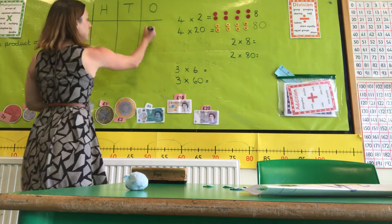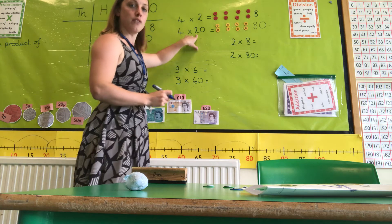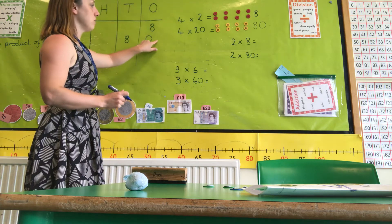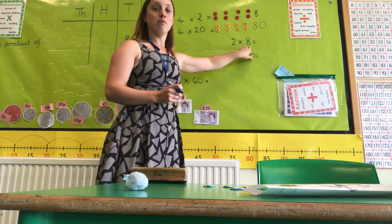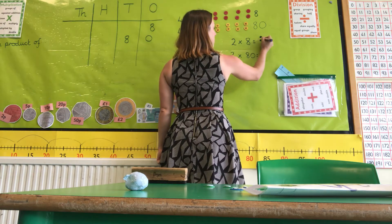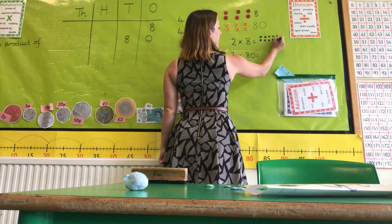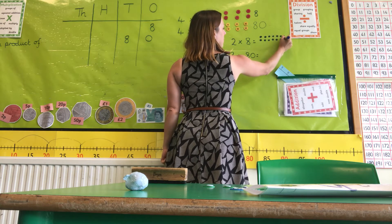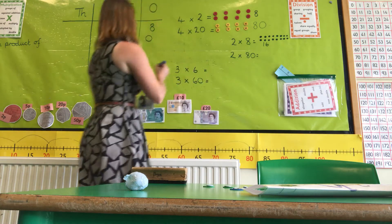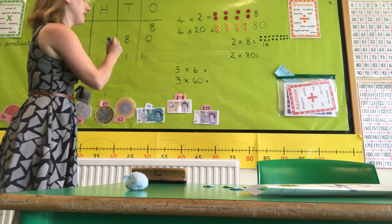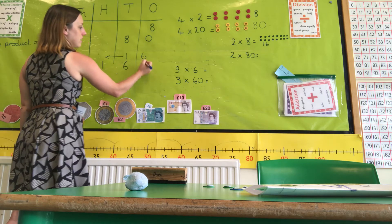If we look at our place value, what we've done is multiplied a single digit number by the 2 of the 20 and then used our place value to fill the space. So here we've got 2 multiplied by 8. If I drew my array, I've got 2, 4, 6, 8, 10, 12, 14, 16. I know that 2 times 8 is 16. If I put that into my place value grid, I need to move my place value along one place. So that means 2 times 80 would be 160.